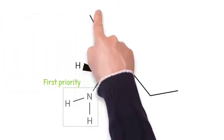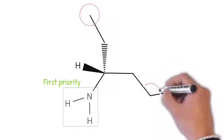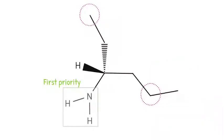To achieve this, we now need to consider the next atoms in each substituent, which we refer to as being two atoms from the stereocenter. If these second atoms are also identical, compare the third atom, and so on.